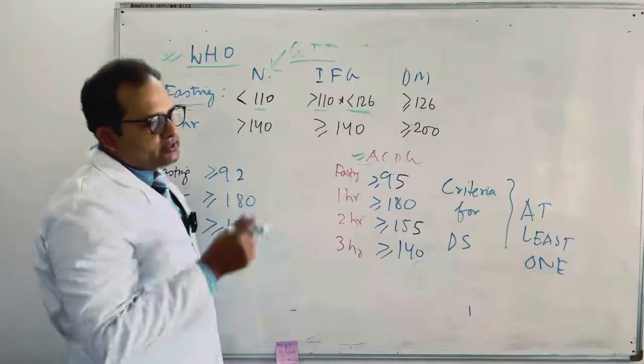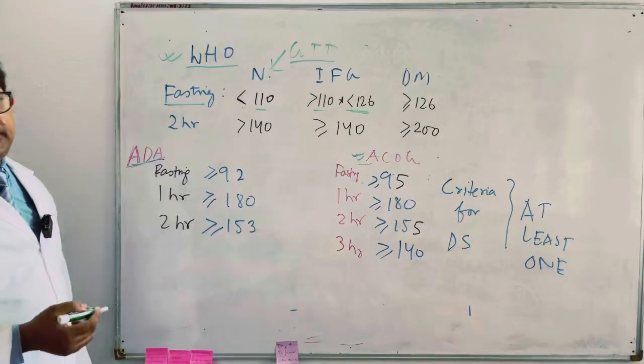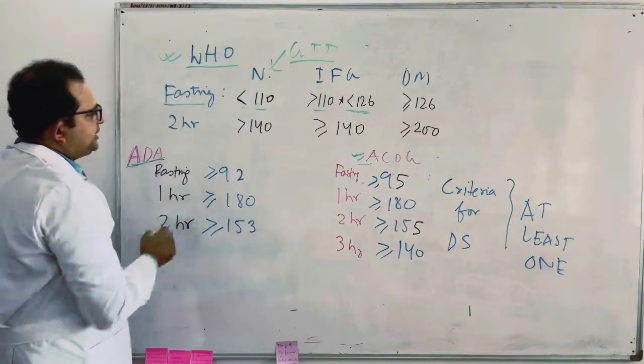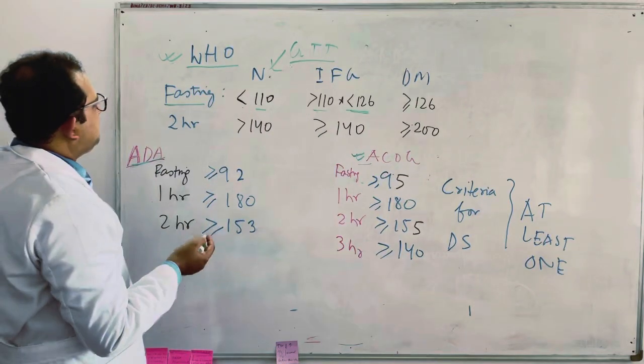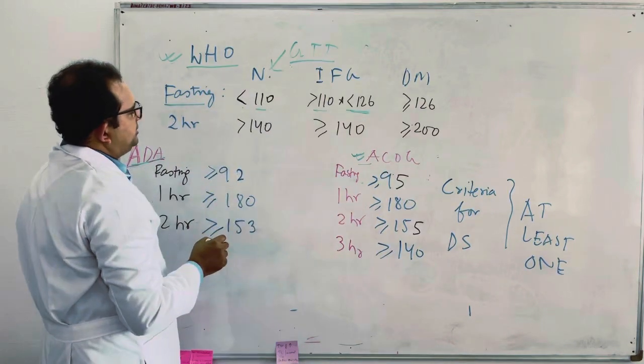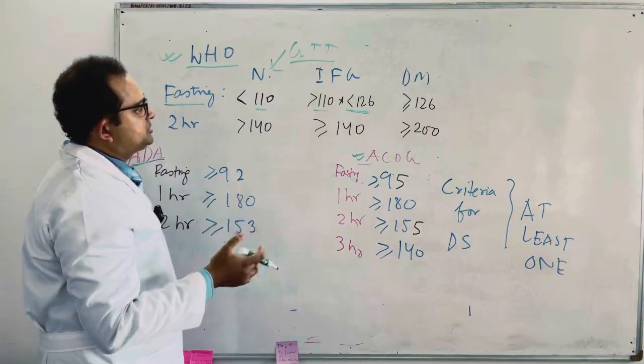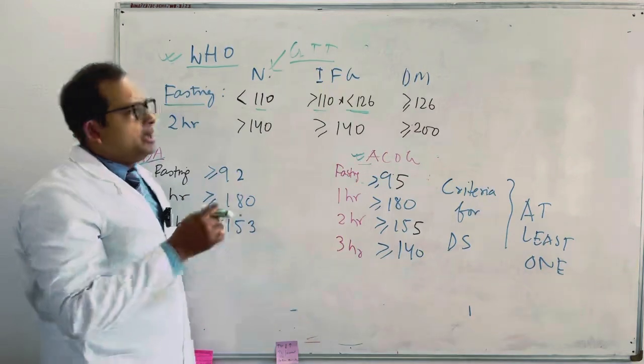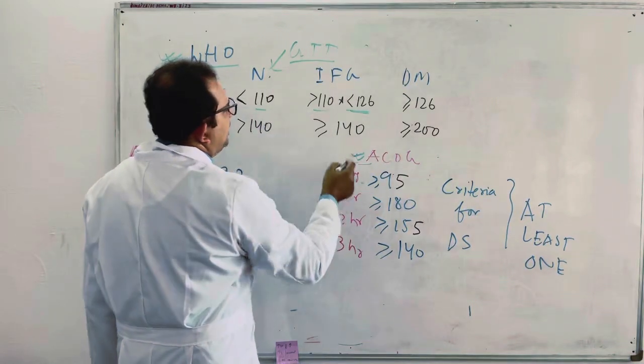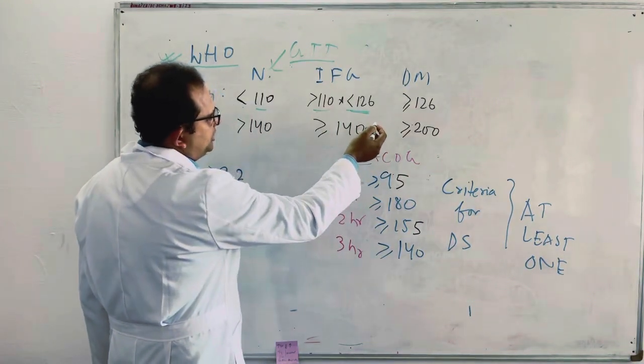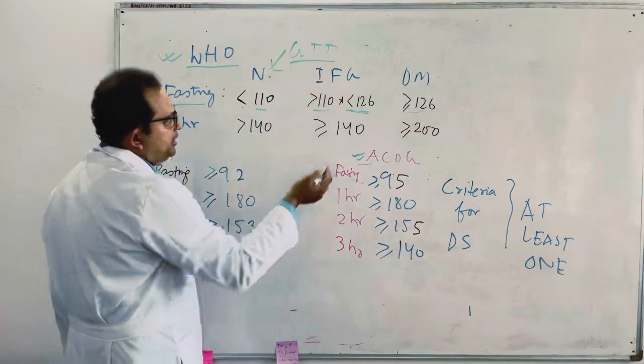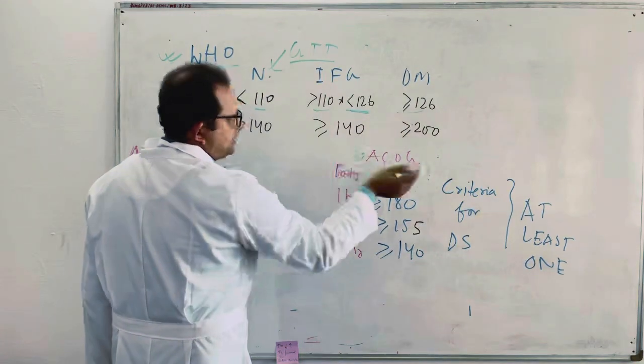So there are three laboratory diagnostic criteria we follow. One is as per the WHO, the second is ADA, and third is of course the ACOG. If the fasting condition and the fasting value comes less than 110, this is normal. If it comes more than 110 and less than 126, this is impaired glucose tolerance. And if it is more than or equal to 126, the values are in mg per dl, it is diabetes, clear-cut diabetes mellitus.